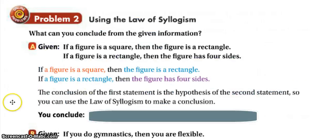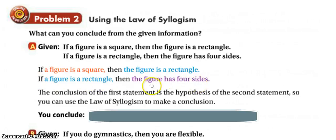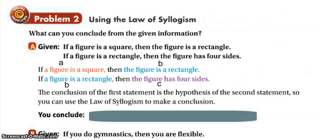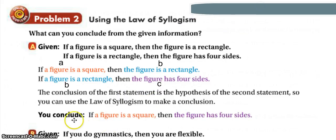Now we're in problem two. If a figure is a square, then the figure is a rectangle — that should be memorized. If a figure is a rectangle, then the figure has four sides. This is our A statement, that's our B statement, then B is restated, and we have our C statement. So if A then B, if B then C — we can conclude: if a figure is a square, then the figure has four sides.